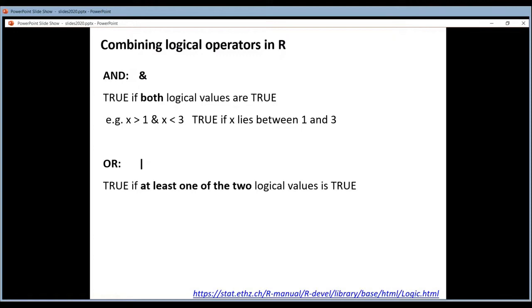Or you can combine them with an OR, and for that you use the pipe operator. If you combine them with an OR, then one of the two or both have to be true to say that the combination is also true. So that's the difference between AND and OR.